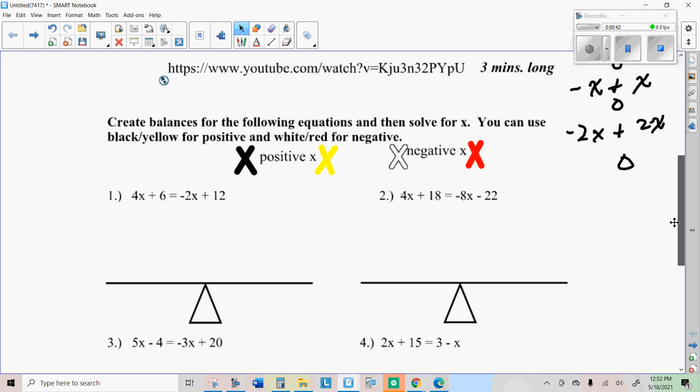So what we could do here is use a black x for positive and a red x for negative. On one side I'm gonna have four x's and then six extra ones. You can write those as ones if you want or six if you want, but I'll just use tally marks. And on this side I'm gonna have a negative 2x, so I'm gonna show that as a red x, and then we have 12 ones there which are positive ones.